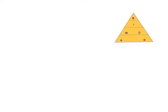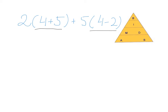So let's start our examples. The first one is 2 bracket 4 plus 5 bracket, plus 5 bracket 4 minus 2. Look at our triangle — on the very top we have B for brackets. It is very important to put a line under the operation; it's really helpful. So let's start with the brackets. We don't do anything with the 2 yet. So 4 plus 5 is 9, then plus 5, and the bracket 4 minus 2 is 2.